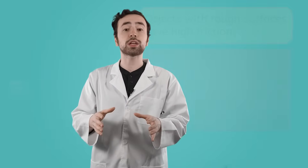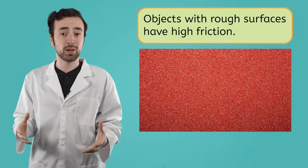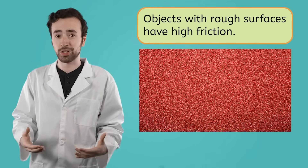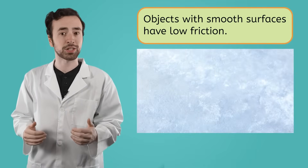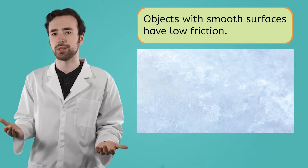Friction occurs when objects rub together because all the little bumps and uneven areas on their surfaces catch on each other, and that makes it more difficult for the objects to just slide right past each other. Because of this, objects with rougher surfaces will generate more friction — things like sandpaper and concrete — and objects with smoother surfaces will generate less friction, like that ice I was sliding around on earlier.